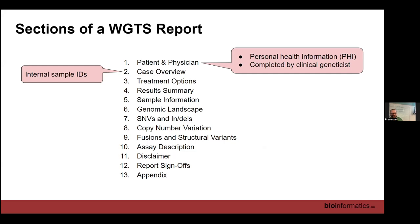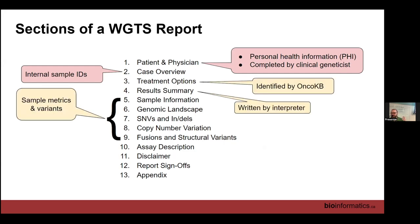Part two is case overview — this has internal anonymized sample IDs, cancer type, and other general information. Then we have the actual variants we found, which is the meat of the report. We have treatment options as identified by OncoKB, a results summary written by the interpreter, and sections five through nine go into detail on individual oncogenic variants. There are genome-wide metrics like tumor mutation burden, purity and ploidy. For SNVs, for instance, we'll summarize the total count — say 108 SNVs — but go into detail on the oncogenic ones identified by OncoKB, typically between one or two and up to about a dozen variants.